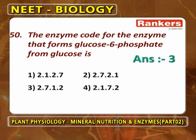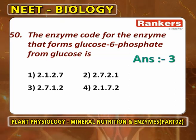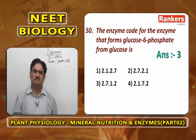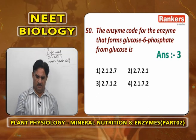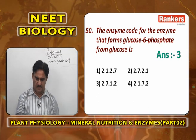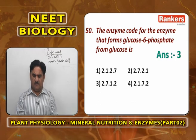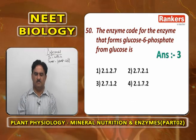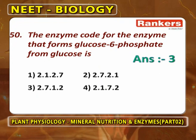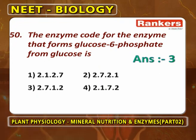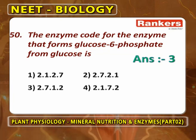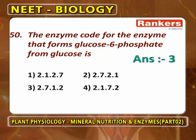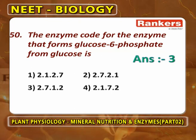The enzyme that forms glucose-6-phosphate from glucose is glucose-6-phosphotransferase. The enzyme code for this is 2.7.1.2. Here, '2' stands for the class, '7' stands for the subclass, '1' stands for the sub-subclass, and the last digit '2' is the serial number of that enzyme in that particular sub-subclass.